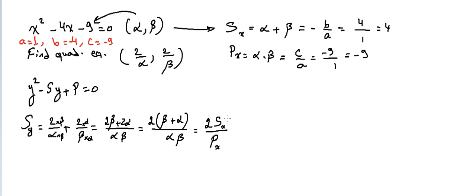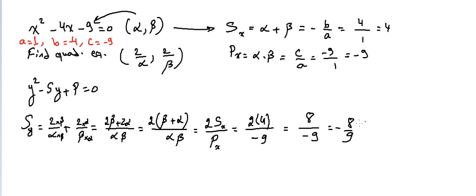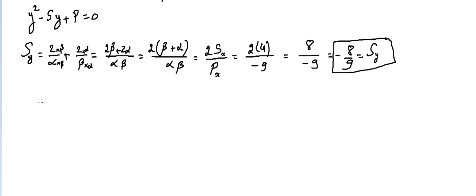Now we go back: the sum in y is two times the sum divided by the product, which is two times four over minus nine, giving eight over minus nine, or minus eight over nine. This is the sum of the y equation.